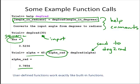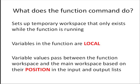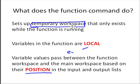Let's look a bit more at what the function command is actually doing. When we have a function command at the top of an mFile, the function sets up a temporary workspace that only exists while the function is running. So all of the variables inside the function are local to that function. You call the function from the command window or from another script, and the first thing the function does is set up that workspace and then pass values from the function call into the workspace based on their position in the input and output lists. Those variables exist only in the function workspace.